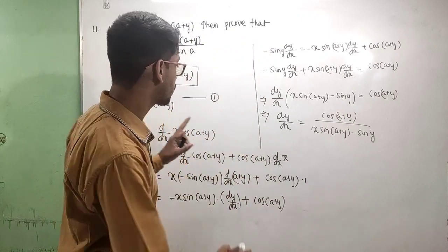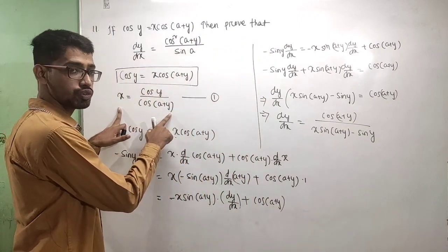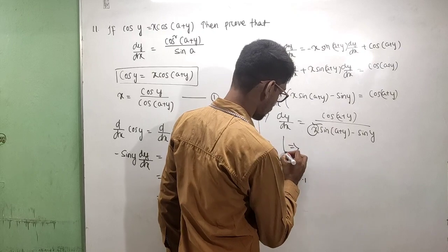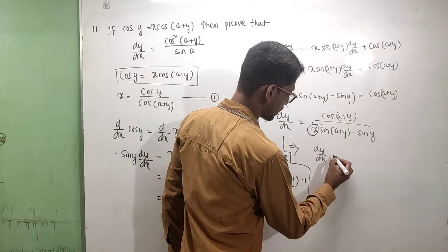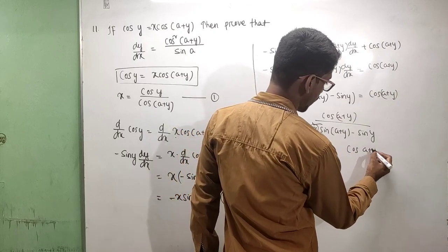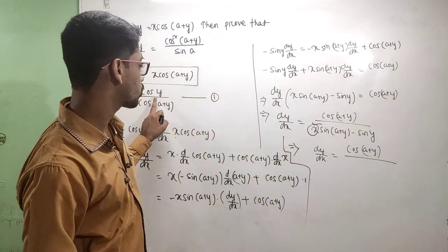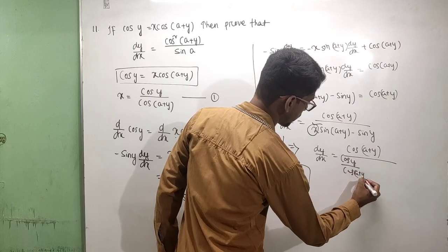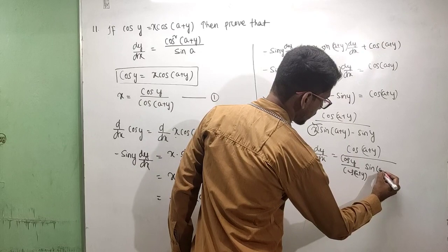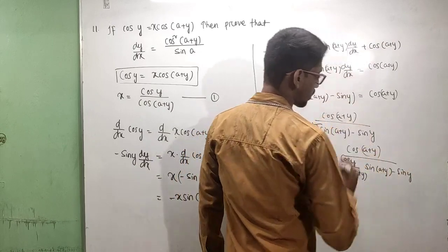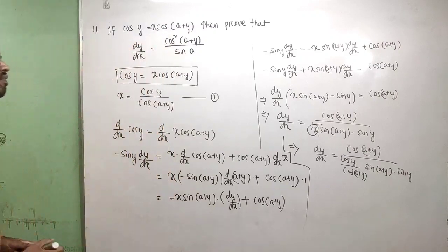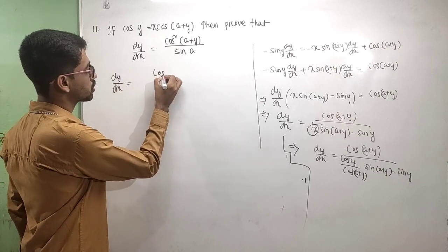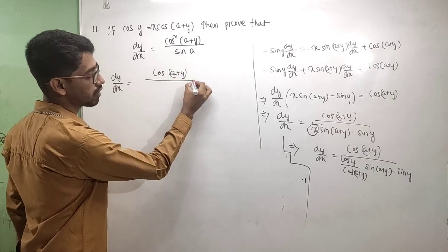Now substituting the value of x from equation one. From cos y = x·cos(a + y), we get x = cos y / cos(a + y). Substituting into dy/dx: dy/dx equals cos(a + y) divided by [cos y / cos(a + y)] · sin(a + y) minus sin y.